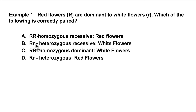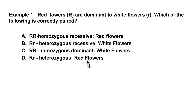Looking at B, we have big R, little r. It is heterozygous, but it says 'heterozygous recessive,' which is not a term we use. Also, big R, little r corresponds to red flowers, not white flowers, so B is wrong. C is big R, big R — that is homozygous dominant, and corresponds to red flowers, so C is wrong. D is big R, little r, which is heterozygous and corresponds to red flowers — so D is correct.